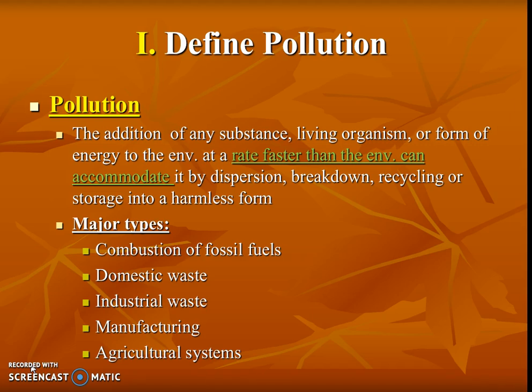There are five major types, and we're going to be learning about these throughout the year. Combustion of fossil fuels creates types of pollution. Domestic waste — that could be your trash. Industrial waste is things like paint, manufacturing of different things. Agricultural systems make insecticides and pesticides — all sorts of different types of pollutants.